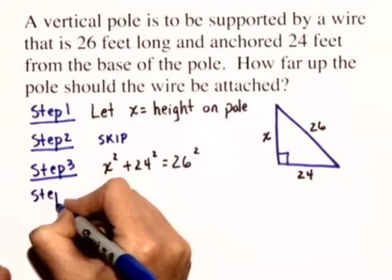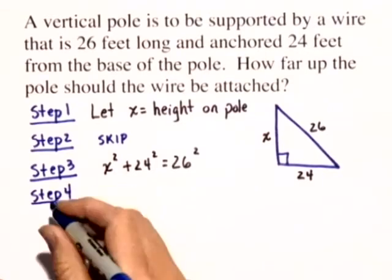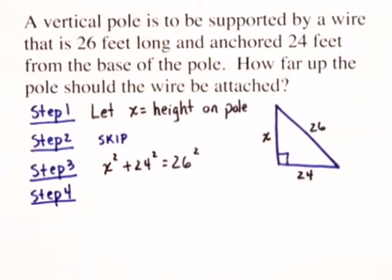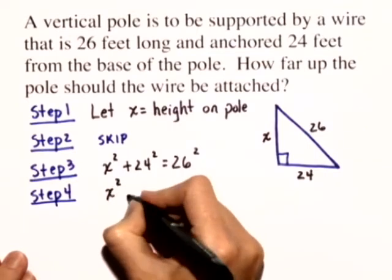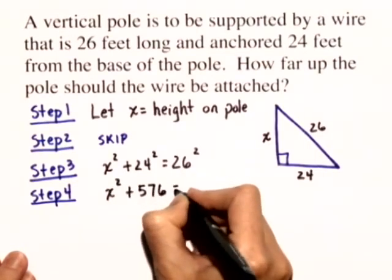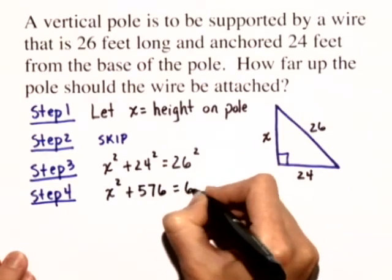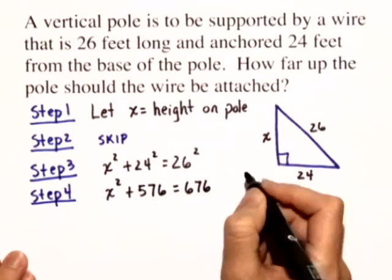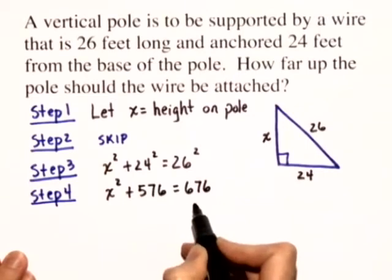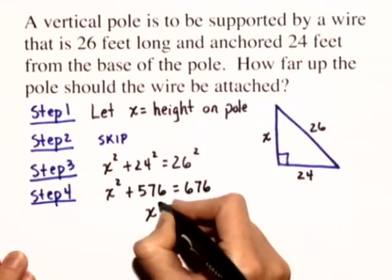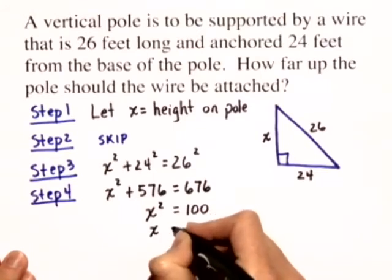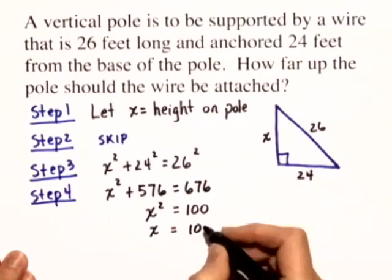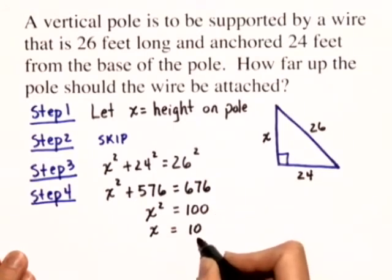So in step four, we'll solve, and we'll get X squared plus 24 squared, which is 576, equals 26 squared, which is 676. If we subtract 576 from both sides, we get X squared is equal to 100, or X is equal to 10. We'll only take the positive square root because X represents a distance.